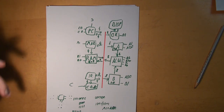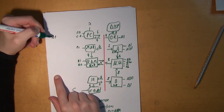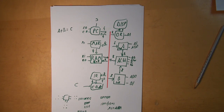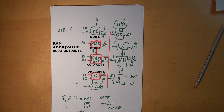Now I'll walk you through a simple computer program: A plus B equals C. The first three steps are always the same — they are called the fetch cycle. First, CO is activated so the program counter outputs a memory address, and at the same time MI is activated so the memory address is saved in the memory address register. Second, the program counter is incremented by one. Third, RAM out and instruction register in is enabled — the value stored at that memory address is transferred from RAM to the instruction register.